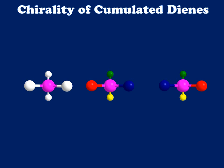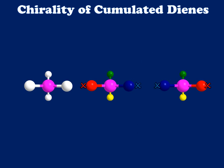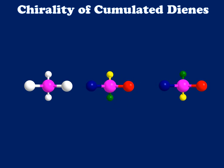It should be easy to see now that two different enantiomeric arrangements are possible. In this example, I've colored them red, blue, yellow, and green, and oriented them in such a way that red and blue do not overlap. Any attempt to rectify this by rotation will place the other side out of alignment. So these are in fact non-superimposable mirror images — the very definition of enantiomers. And this is why cumulated dienes can, and often do, have chirality.